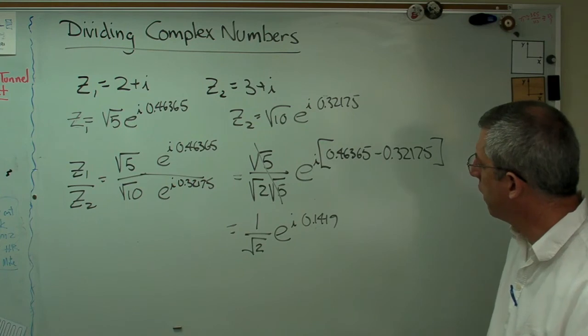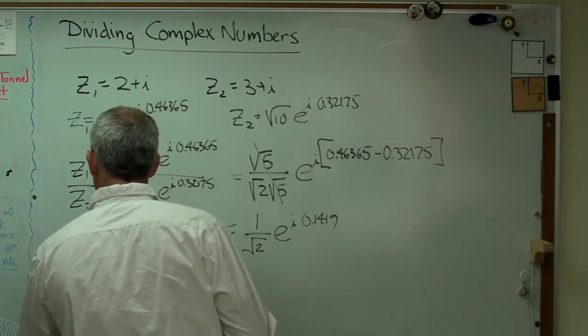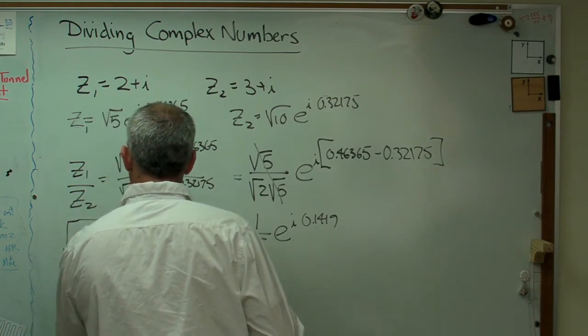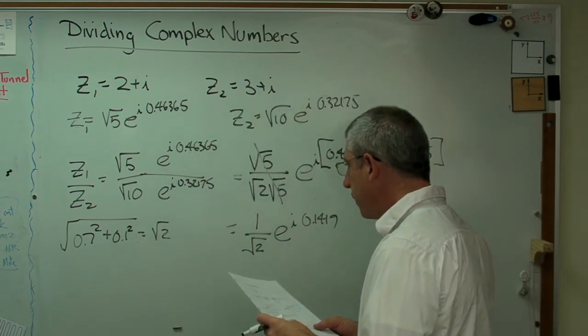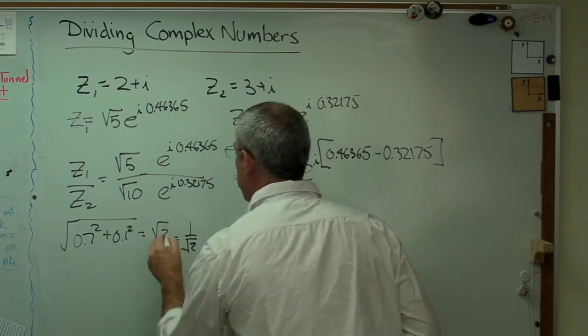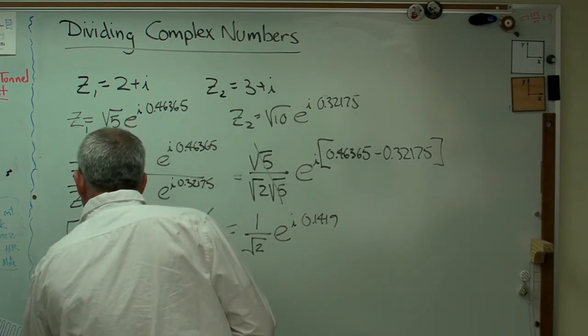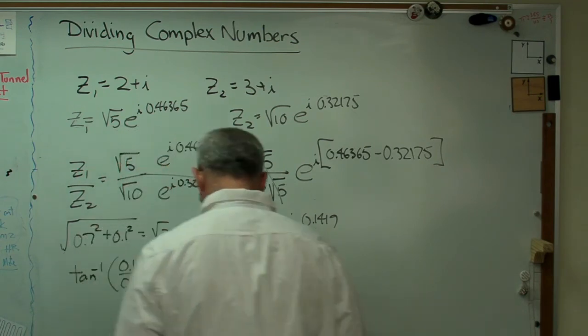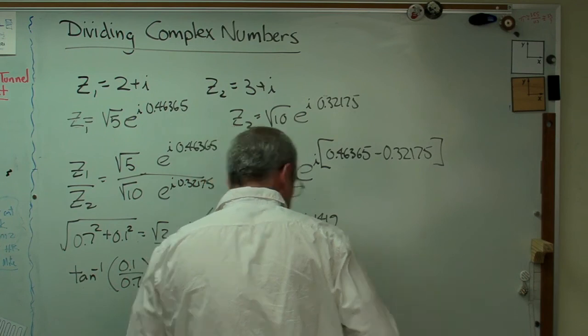So am I sure that that equals that number I had the first time? Let's just double check. 0.7 squared plus 0.1 squared equals—that does indeed equal the square root of 2, or square root of 2 over 2, which is also equal 1 over the square root of 2. So I know that's true. Check that. And then my angle, inverse tangent of 0.1 over 0.7—when I do that, I really do get 0.1419. All right.